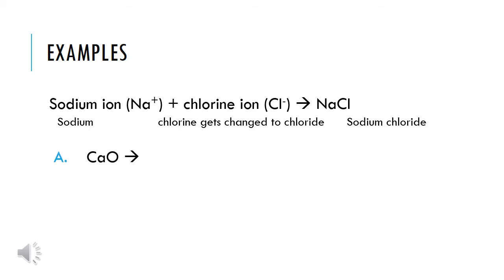Let's do a few more. Take a look at A: CaO. Think — what does CA stand for and what is its charge? What does O stand for and what is its charge? CA stands for calcium, and calcium is a metal, so we know that's our cation. The name calcium stays the same. The O stands for oxygen, and since oxygen is written second and is a nonmetal, we need to change the ending to -ide. So oxygen becomes oxide. All together, it's calcium oxide.